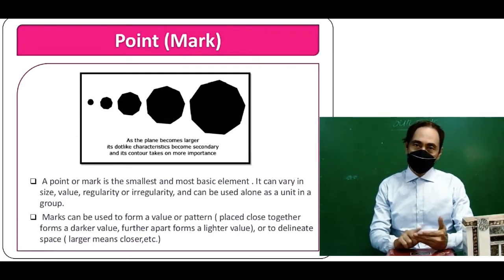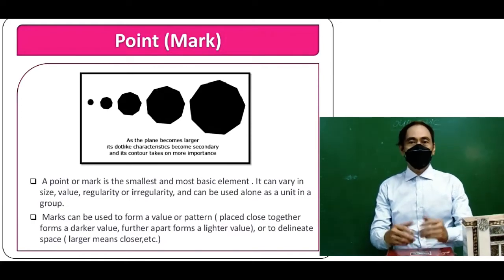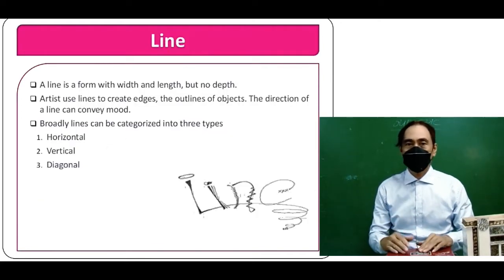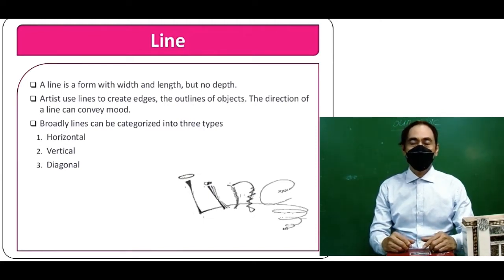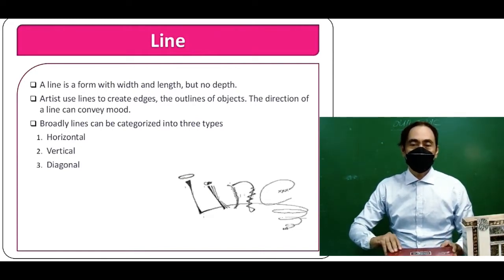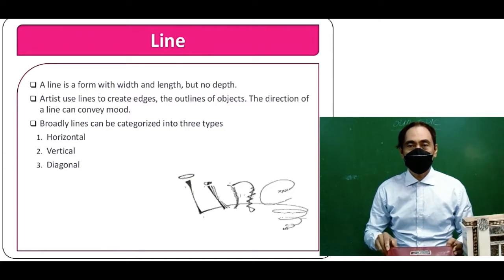A line is a form with width and length but no depth. Artists use lines to create edges and outlines of objects. The direction of a line can convey a mood.